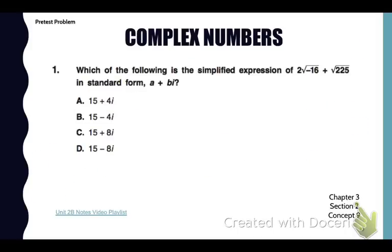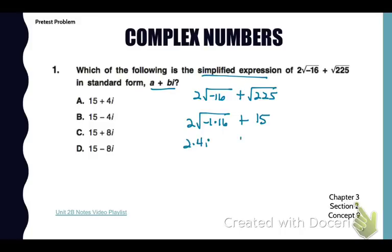Go to your pretest packet now and look at number one. See how you did on that problem. We need to simplify 2 times the square root of -16 plus the square root of 225. Notice that we need to give our answer in standard form which is real number first then imaginary. First thing I need to do is take the square root of -1 and the square root of 16. That is 4i multiplied by the 2 that was out front which is 8i. The square root of 225 is 15. In standard form this answer is c, 15 + 8i.